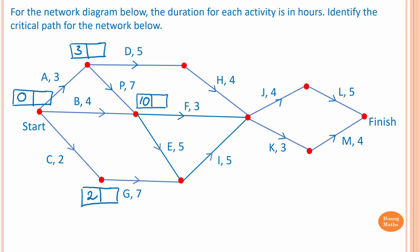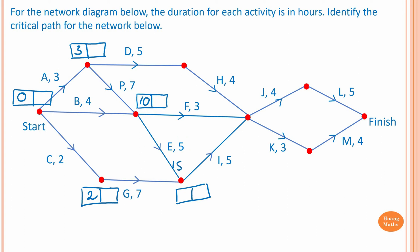In backward scanning we take the smallest value. To start on activity I, we need to complete activity E and G first, so we find the largest value. Five plus ten is fifteen, and two plus seven is nine. Fifteen is the largest value, so the earliest starting time for I is fifteen.